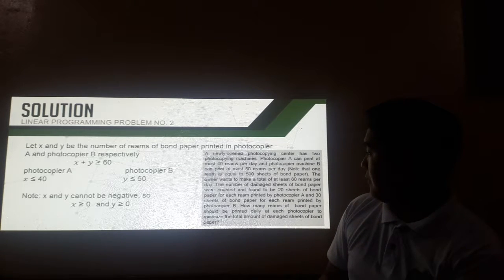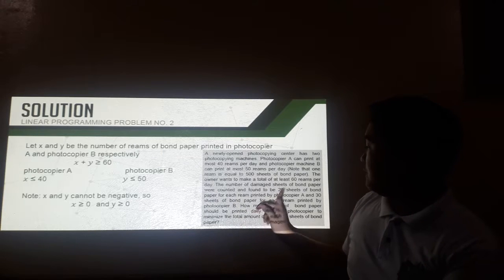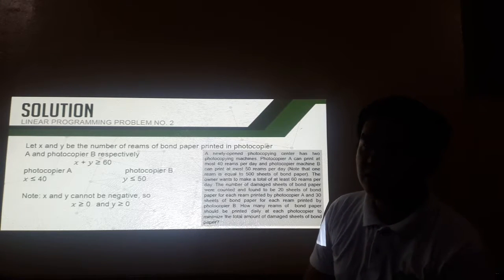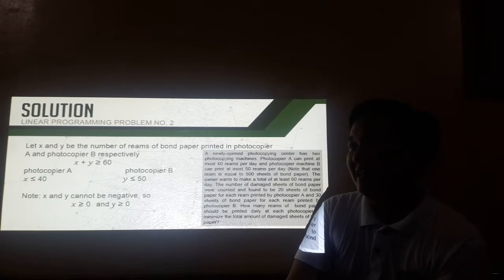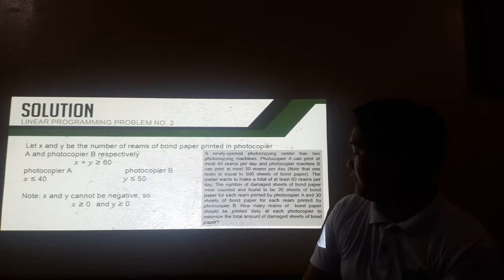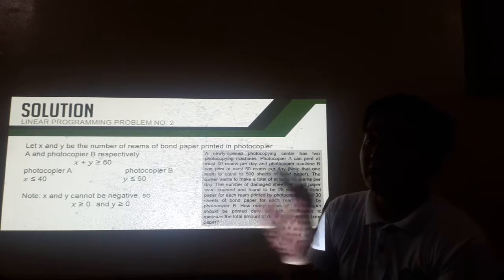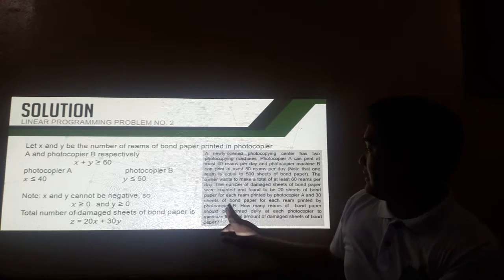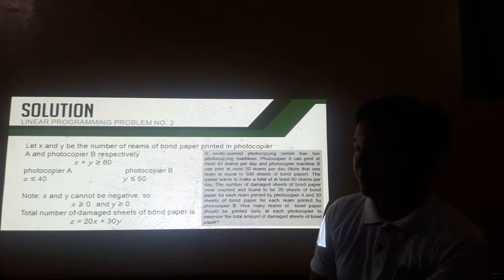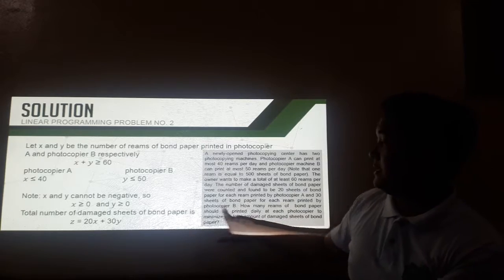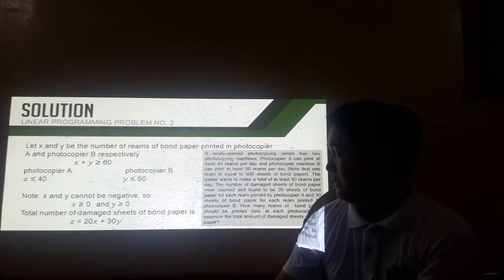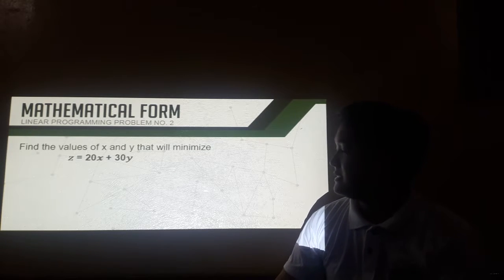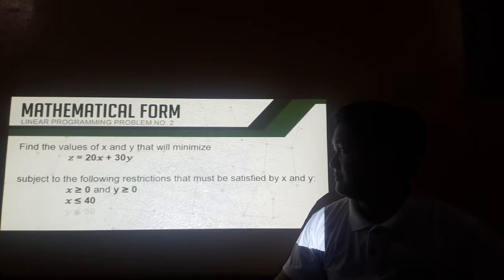For our objective function, the number of damaged sheets of bond paper were counted and found to be 20 sheets for photocopier A and 30 sheets for photocopier B. This is our objective function, because for this problem we need to identify the minimum value — the least total amount of damaged sheets of bond paper for each photocopying machine. So it can be represented by: z is equal to 20x plus 30y. We need to find the values that will minimize this objective function, subject to the following restrictions.